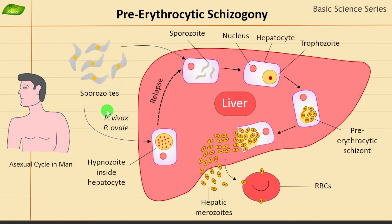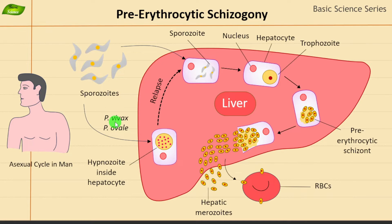Different species are differentiated on various aspects, for example the frequency of fever in malaria, the number of merozoites they produce, and various morphological features. Different types of malaria also have different pathophysiological complications, and based on that you can classify these different species.